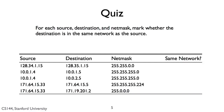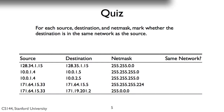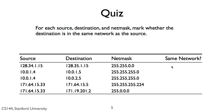Here's a quiz. For each source, destination, and net mask, mark whether the destination is in the same network as the source. Let's walk through the answers. The answer to the first row is no — they are in different networks. The two addresses differ in their second octet, 34 versus 35. If we take a bitwise AND of the two addresses with the net mask, we get 128.34.0.0 and 128.35.0.0, which are not the same.